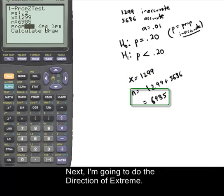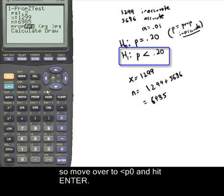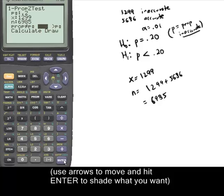Next I'm going to do the direction of extreme, that's the inequality from H1. Notice it's less than, so go to less than, and over here you hit enter to shade what you want. So I move on to less than P0, enter, and then I go to calculate.